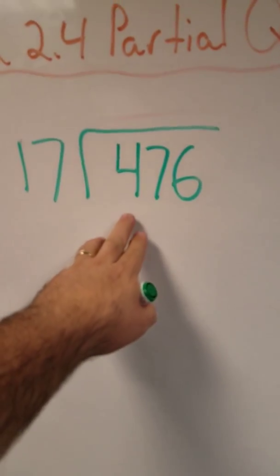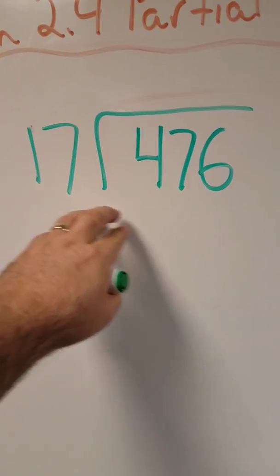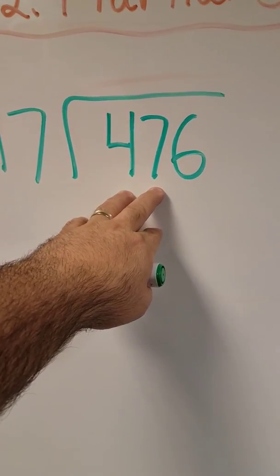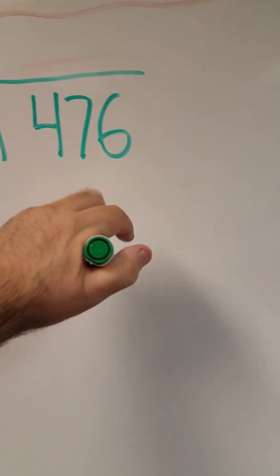Now, instead of figuring out, can 4 be divided by 17? No, it can't. Can 47 be divided by 17? Yeah, it's a 2 something. Well, I'm going to do this in chunks.